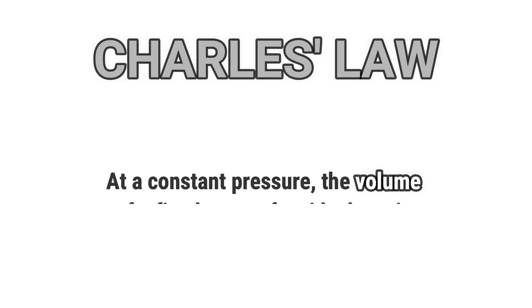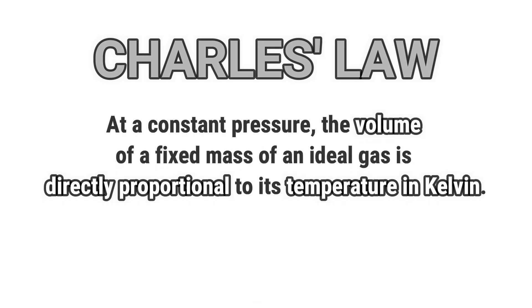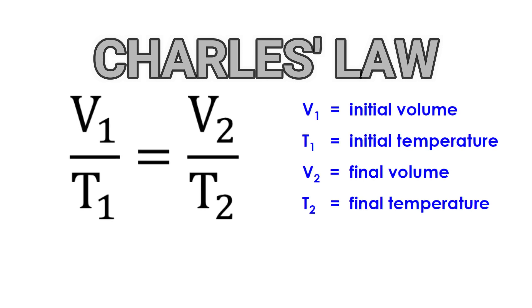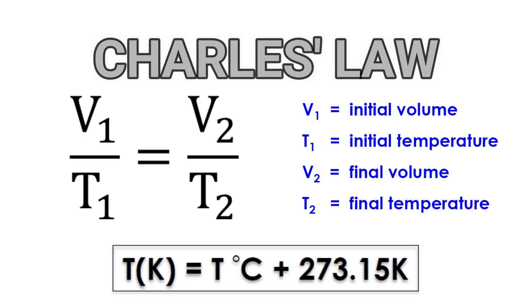Another assumption is that when gas is perfect, it will obey Charles' law. Charles' law states that at a constant pressure, the volume of a fixed mass of an ideal gas is directly proportional to its temperature in Kelvin. The formula of calculation related to Charles' law is as follows. For Charles' law, the unit of temperature has to be in Kelvin. To convert from degrees Celsius to Kelvin, a conversion formula applies, and volume can be in any unit as long as the unit is the same for both sides.